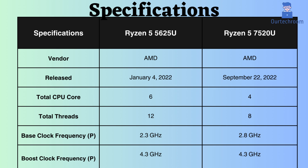The Ryzen 5 7520U was released approximately 8 months after the release of the Ryzen 5 5625U. The Ryzen 5 5625U features 6 performance cores and 12 performance threads, whereas the Ryzen 5 7520U has 4 performance cores and 8 performance threads. Having more cores and threads, the Ryzen 5 5625U is better for multi-threading applications.